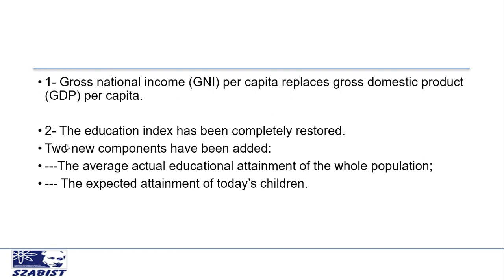The second difference is that in the new HDI the education index has been completely restored. New components have been added: the average actual educational attainment of the whole population, and the expected attainment of today's children. In the old HDI, if a student enrolled in school but then dropped out, that person was still counted as educated regardless of how many years of education he or she had. In the new method, there is a minimum benchmark — such as 8 or 10 years of schooling — to consider a person educated.